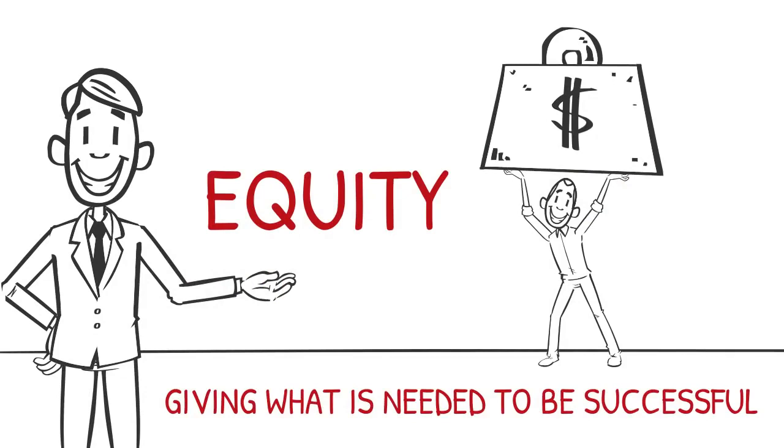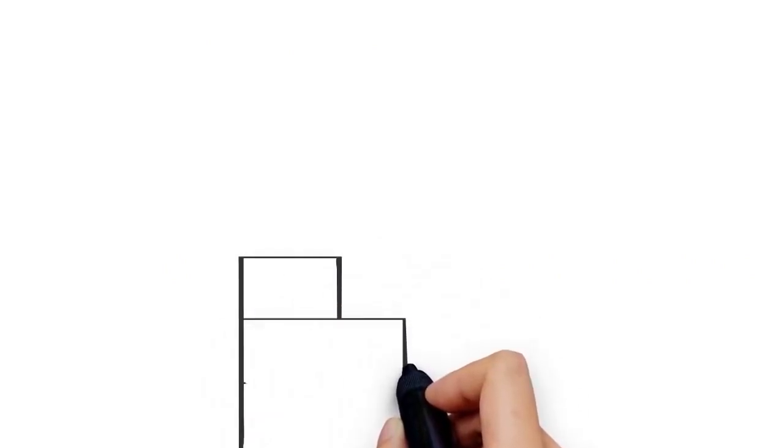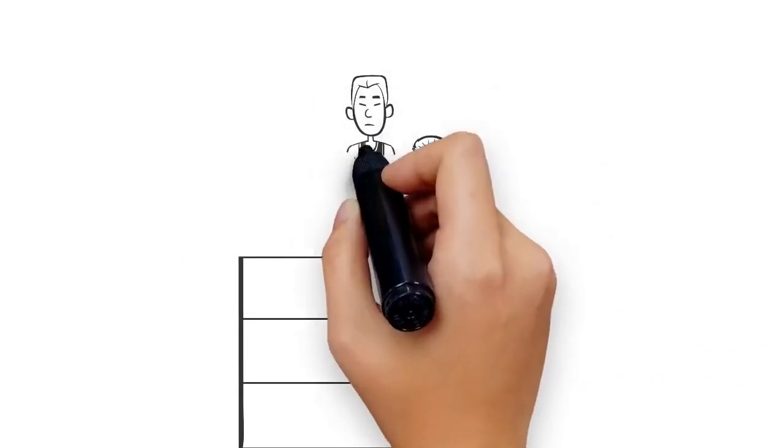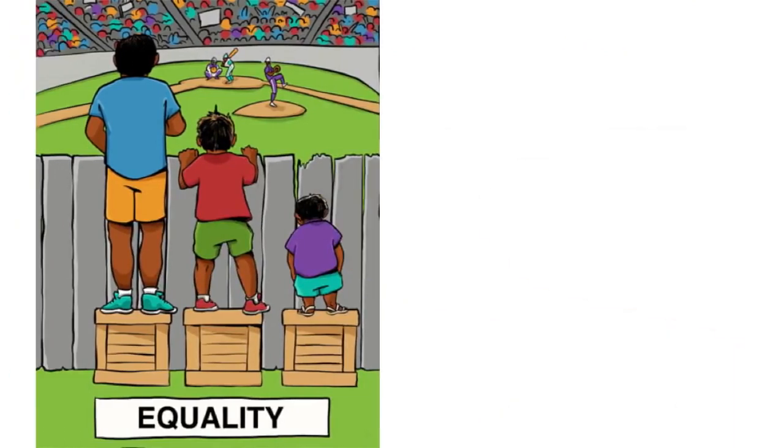What is the need of a student? He deserves that in a school system to be successful. If you look at a picture on the left, equality is giving equal sizes of boxes to all three students. Well, the left one is a taller one—he does not really need one to enjoy the game.